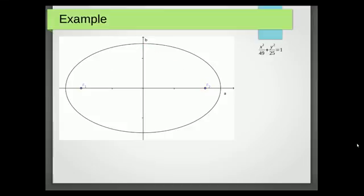Here's an example. Imagine we've got an ellipse and it's got the equation x squared over 49 plus y squared over 25 equals 1. Now the 49 and the 25 are A squared and B squared, so that gives us that A equals 7 and B equals 5.